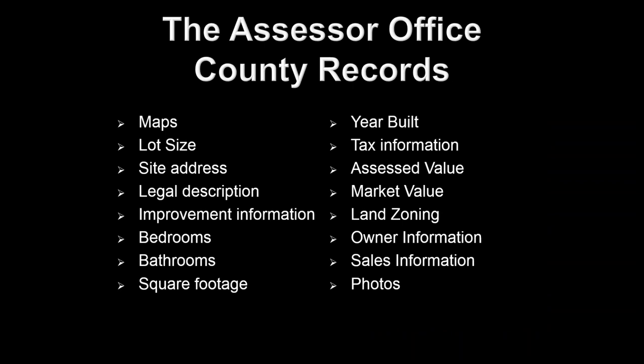The assessor's office is where we find county records: maps, lot size, site address, legal description, improvement information — especially for structured properties like homes or commercial properties. We'll see bedrooms, baths, square feet, when it was built, assessed value, market value, zoning, and owner information. We'll also find sales information, which is a good clue — we can see when the property was last purchased and for how much. Some county records will also include photos, and we'll look at both types this evening.